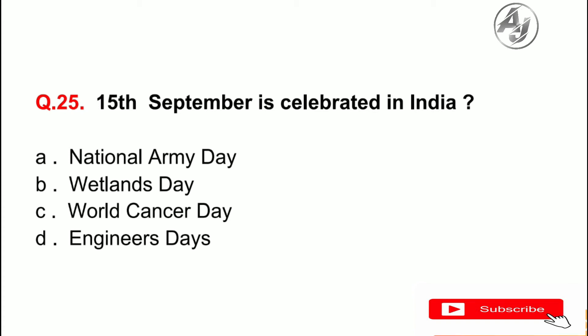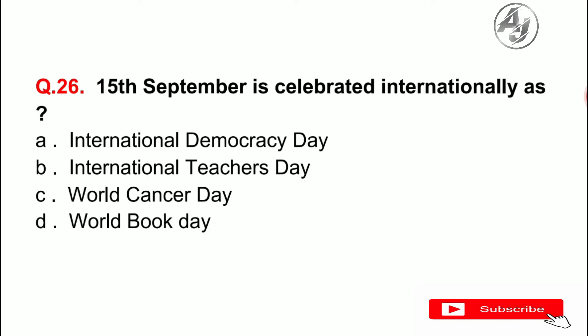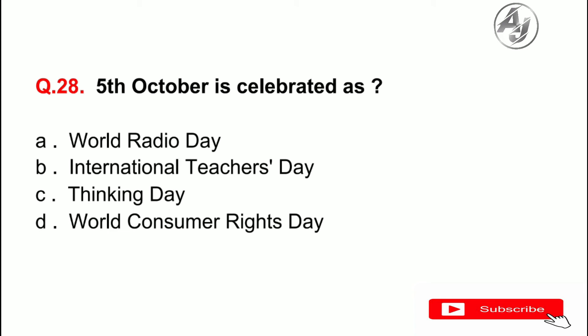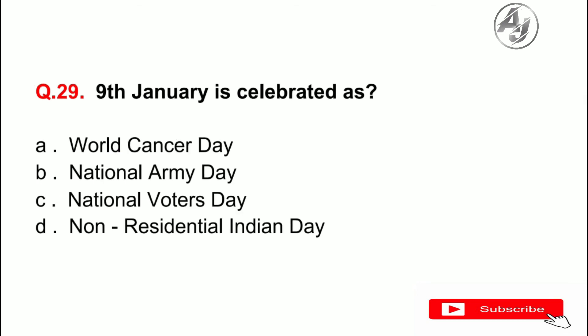Question number 25: 15th September is celebrated in India as — the answer is D — Engineers Day. Question number 27: 5th September is celebrated as — the answer is C — National Teachers Day. Question number 28: 5th October is celebrated as — the answer is B — International Teachers Day. Question number 29: 9th January is celebrated as — the answer is D — Non-Residential Indian Day.